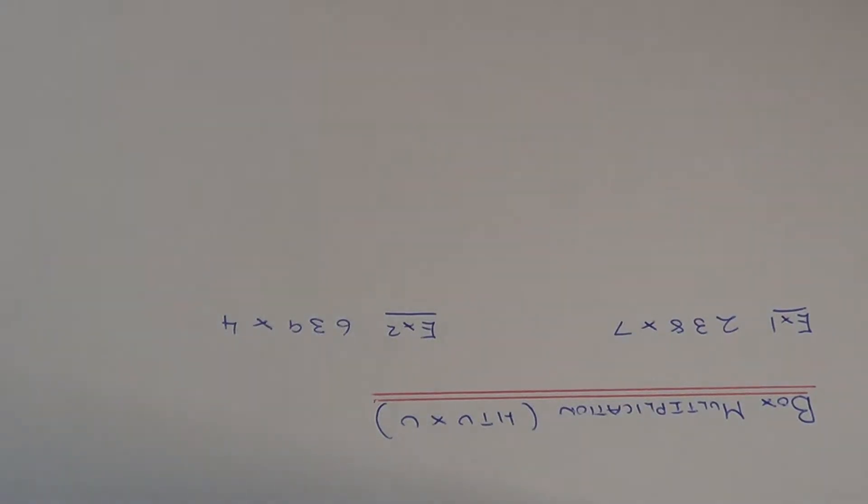Today I'm going to show you a couple of examples on how to use box multiplication to multiply a three digit number by a single digit number.